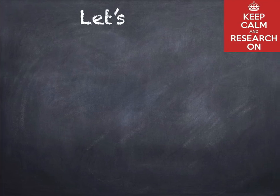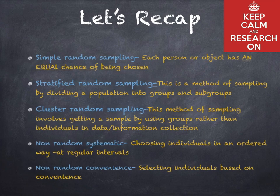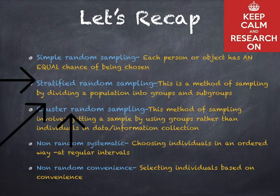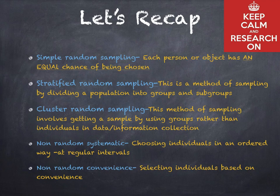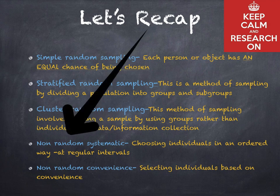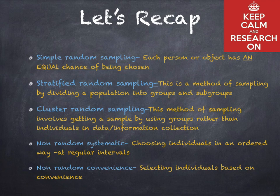Let's recap those five different types of sampling. Simple random sampling: each person or object has an equal chance of being chosen. Stratified random sampling: dividing a population into groups and subgroups. Cluster random sampling: using groups rather than individuals. Non-random systematic: choosing individuals in an ordered way at regular intervals. And non-random convenience: selecting individuals based on convenience. These are the five types you can utilize in your research to collect data.